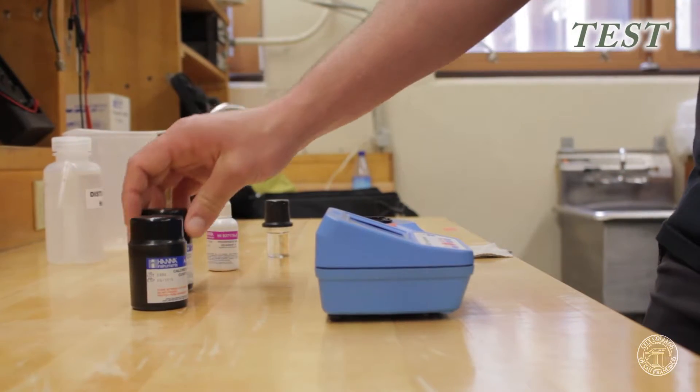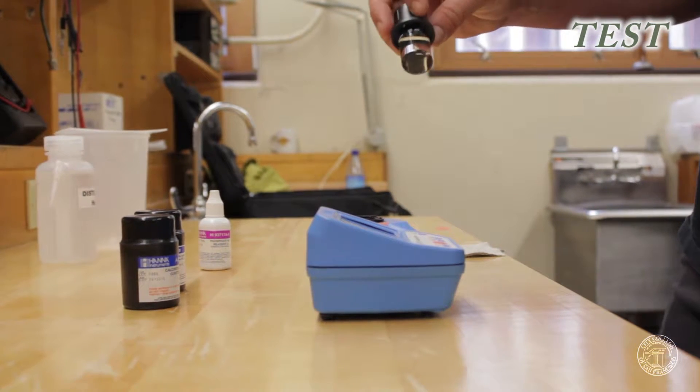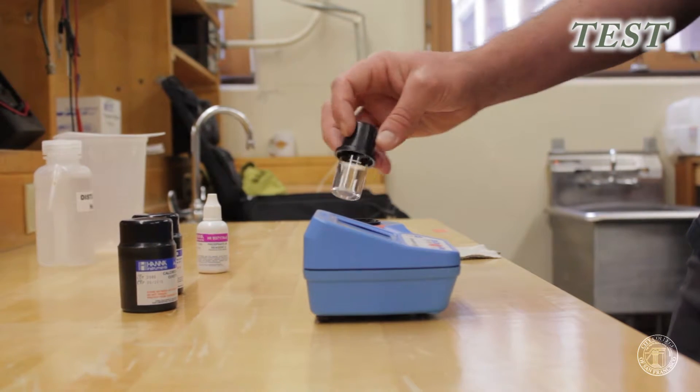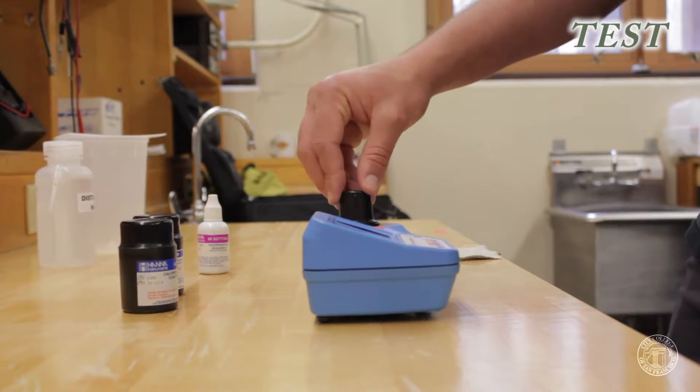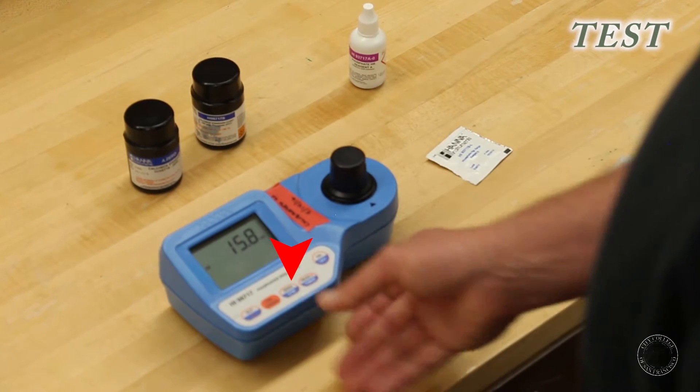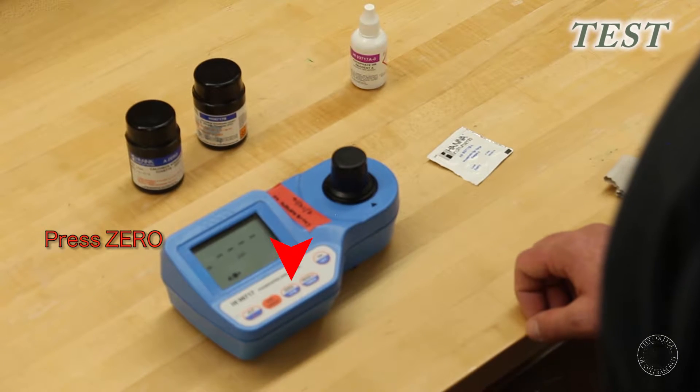To take a reading, we'll take our sample cuvette filled with 10 milliliters of unreacted water. This is just local tap water here. So we'll put that in. And every time you have a new sample, you want to take your sample and zero it out before you add your reagents. So we'll put the sample in and push zero.